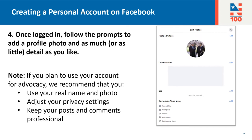Once you've confirmed your contact information and logged in, follow the prompts on your page to add a profile photo and as much or as little detail as you like. I would like to note that if you plan to use your account for advocacy, we recommend that you use your real name and photo — this will make you look more credible. Adjust your privacy settings; this will allow you to keep your personal posts private and your advocacy posts public. You'll also want to keep any posts or comments that you make on Facebook professional.